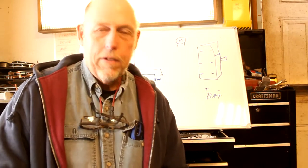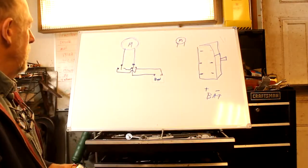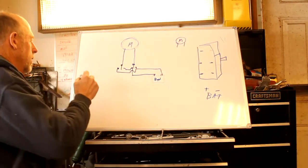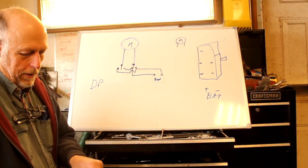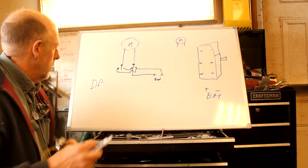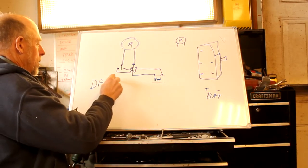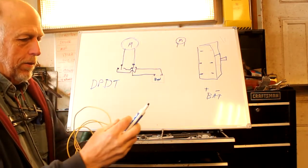So the first thing you have to decide is what you need for a switch. We're looking at a double pole, meaning there's two sets of contacts in each switch. Double throw, which means it throws in two different directions.